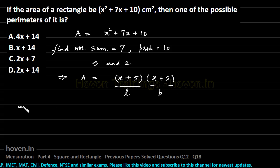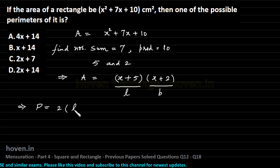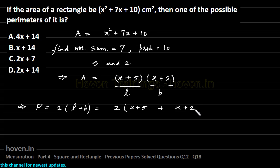Which implies perimeter should be equal to 2 times the length plus breadth which is equal to 2 times x plus 5 plus x plus 2, that is equal to 2 times 2x plus 7.